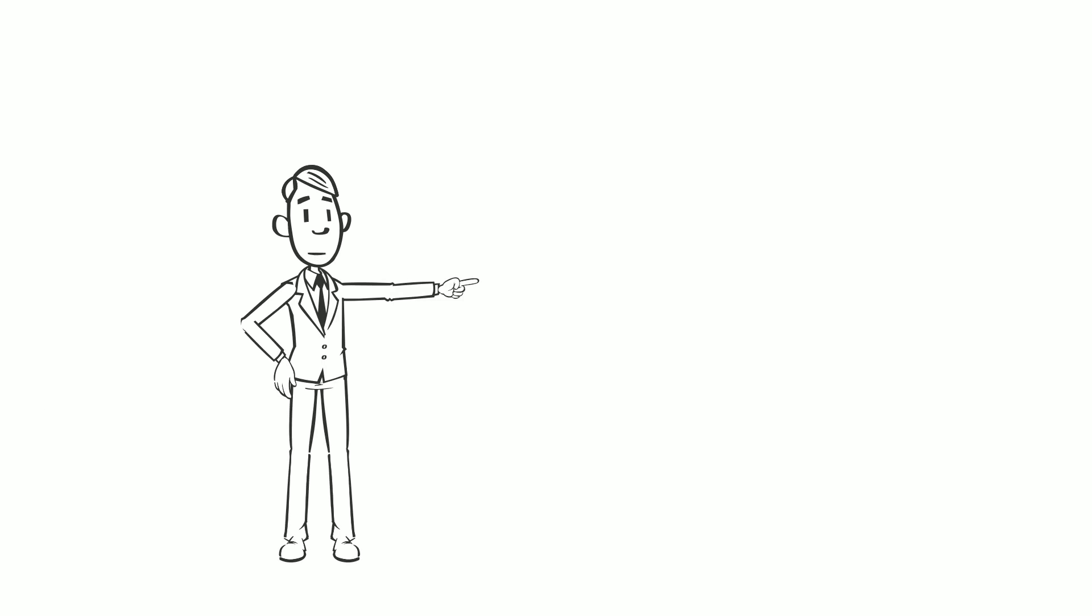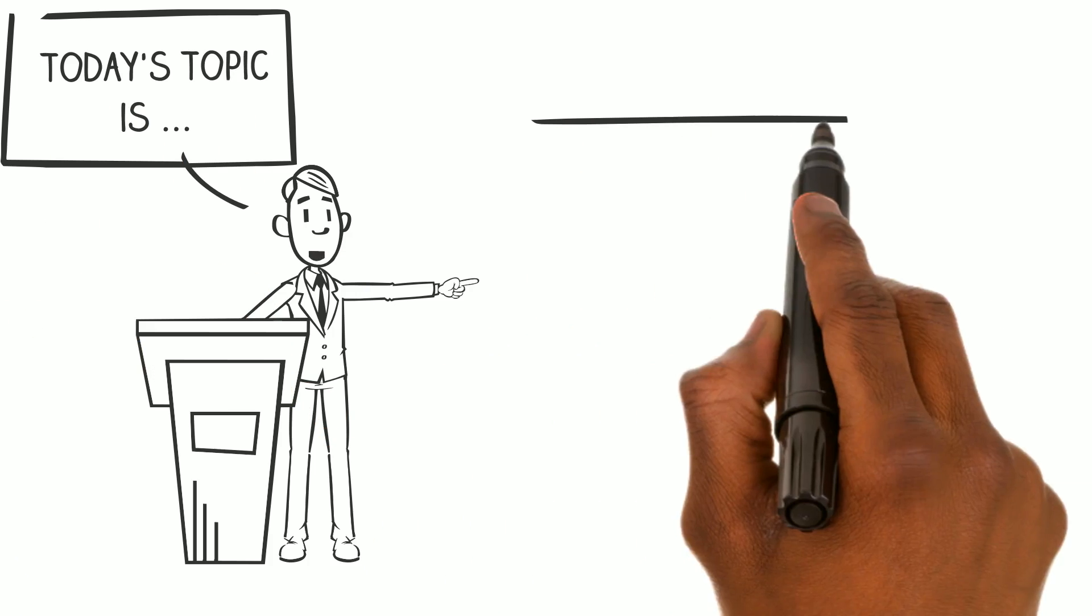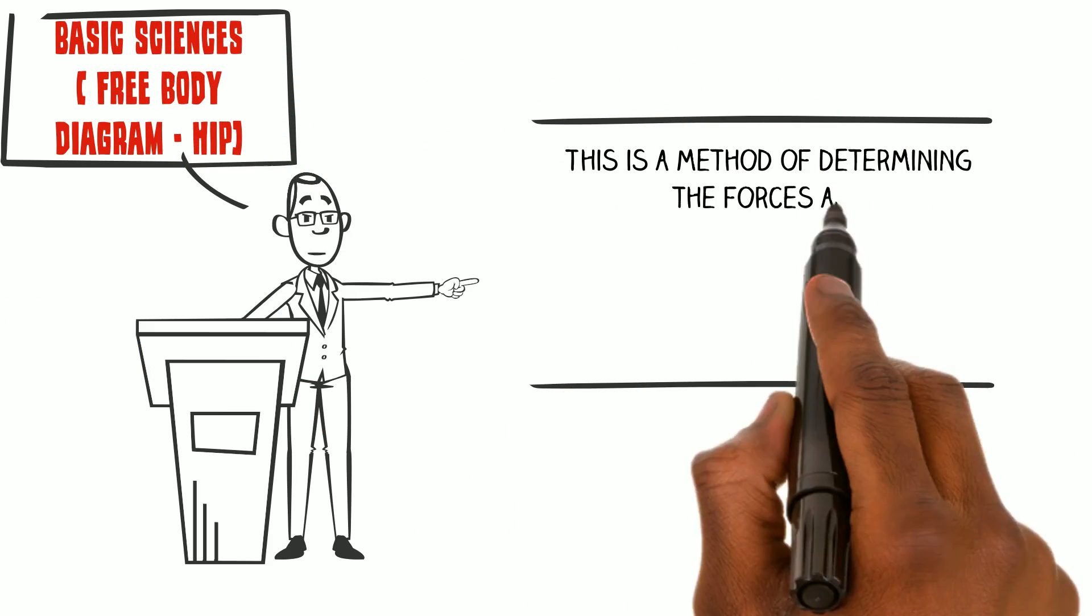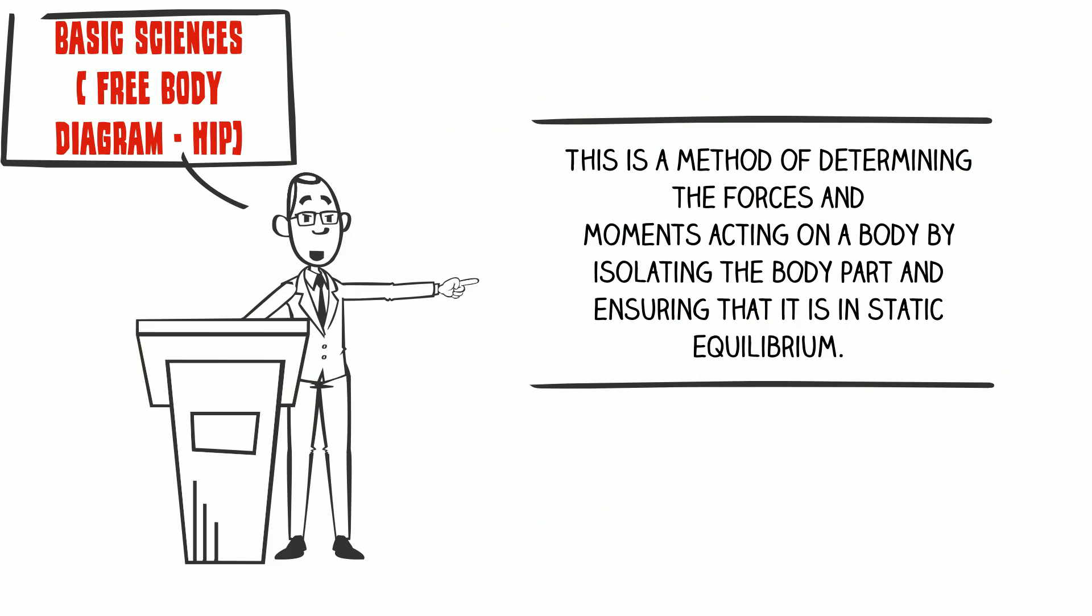Welcome to basic sciences. Today's topic is the free body diagram for the hip. This is a method of determining the forces and moments acting on the body by isolating the body part and ensuring that it is in static equilibrium.